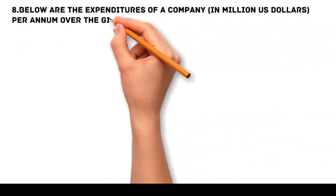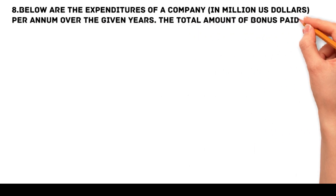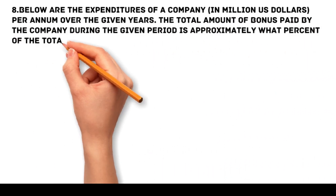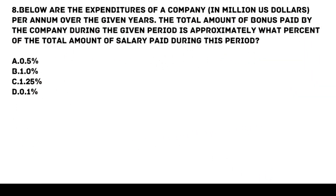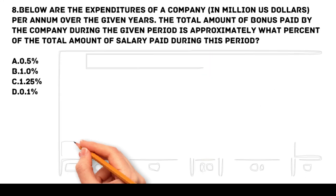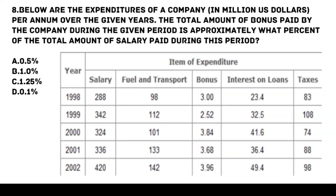Problem 8: Below are the expenditures of a company in million US dollars per annum over the given years. The total amount of bonus paid by the company during the given period is approximately what percent of the total amount of salary paid during this period? Options: a. 0.5%, b. 1%, c. 1.25%, d. 0.1%.